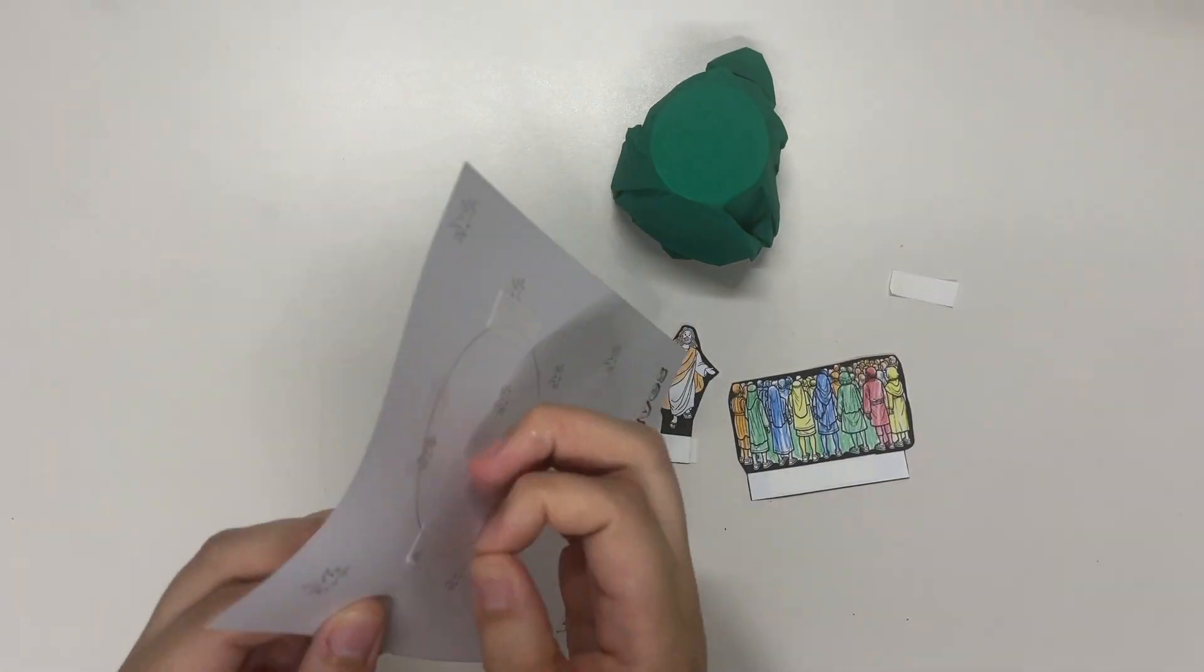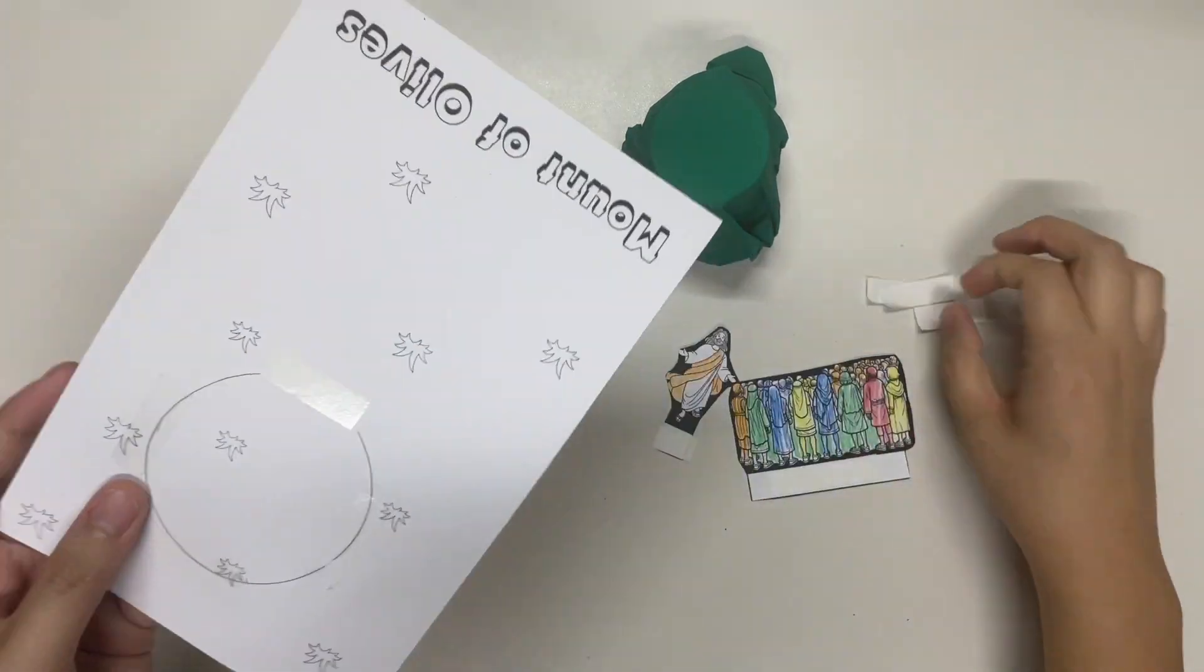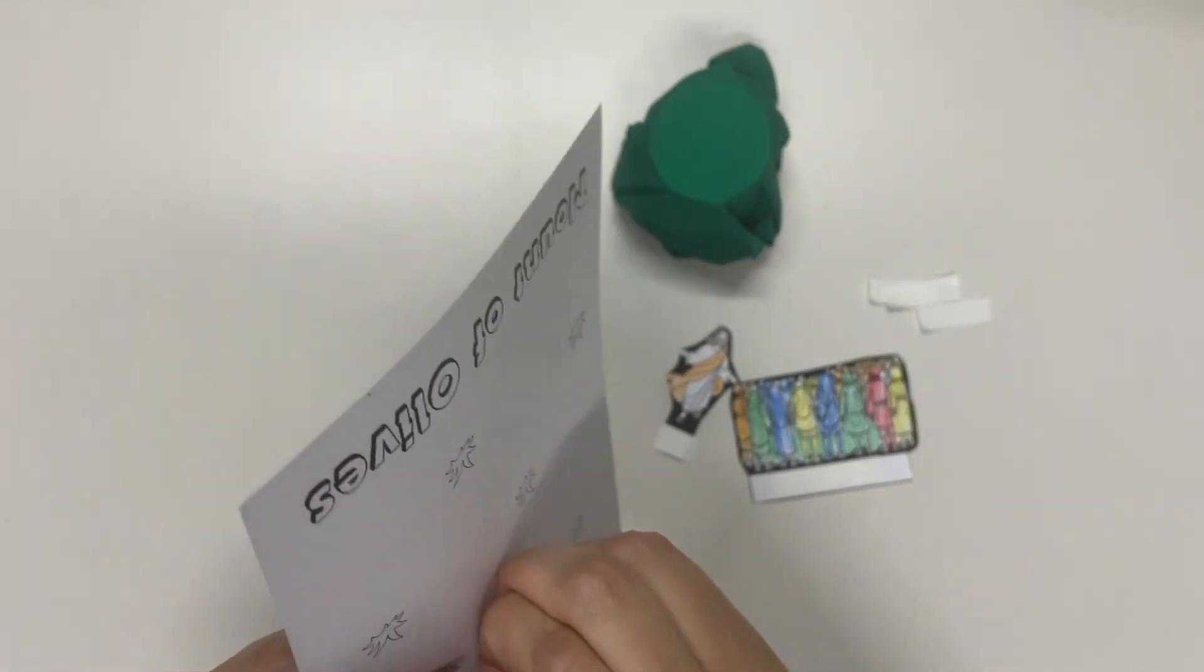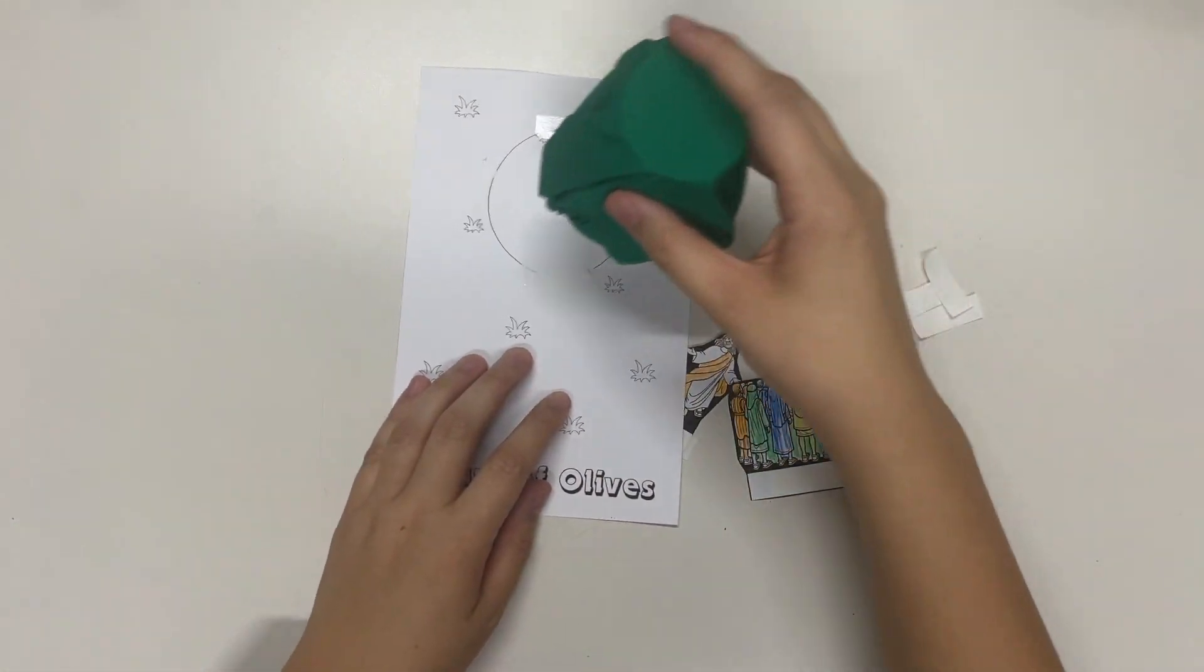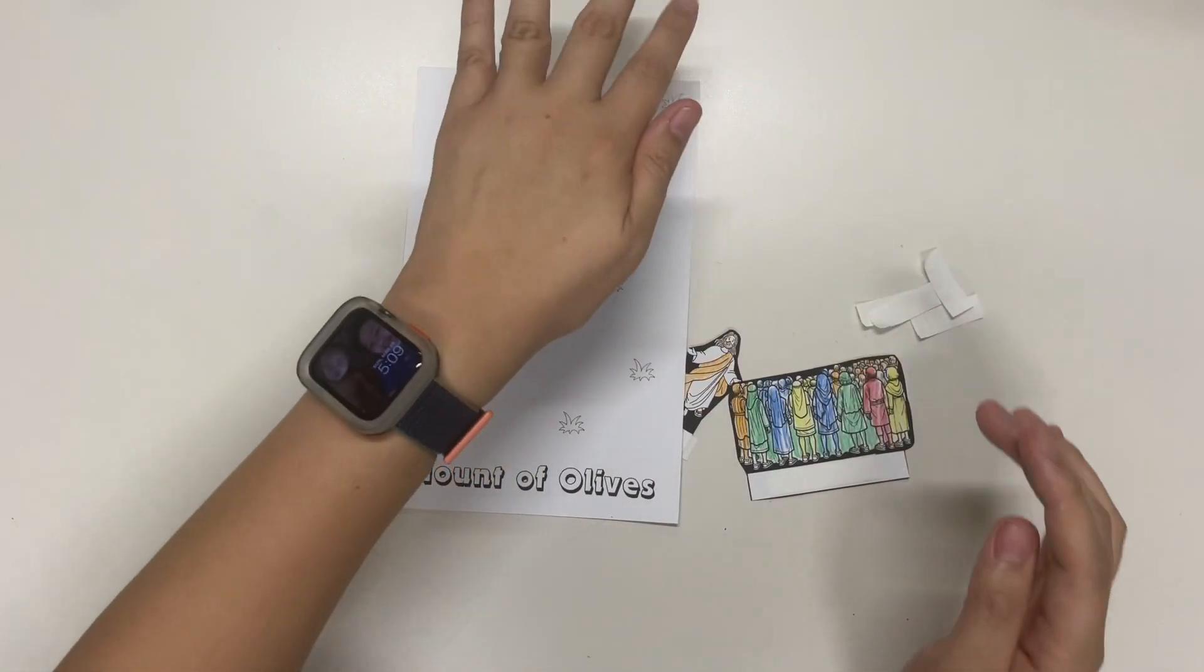So let's grab our base card and remove the double-sided tape film. Then we can carefully place our mountain on top of the base card.